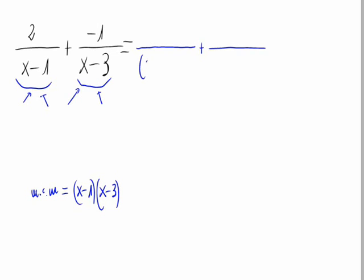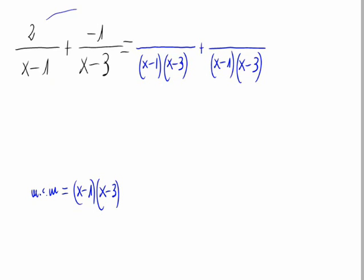Let's write this common denominator on both of the terms, both of the fractions. And now, we have to multiply the numerator by what's left of dividing the denominator by the old denominator.